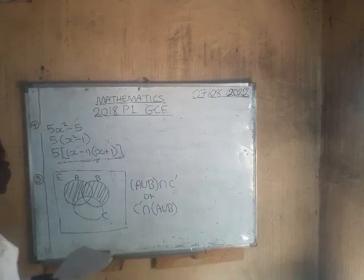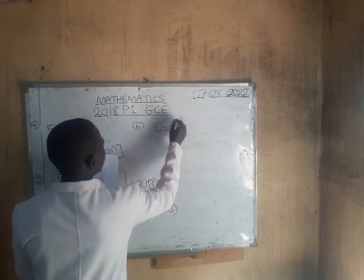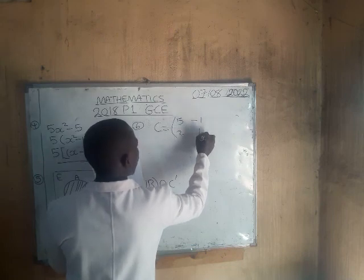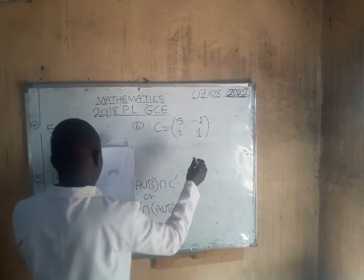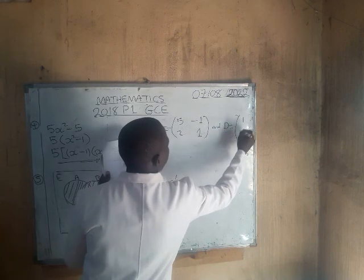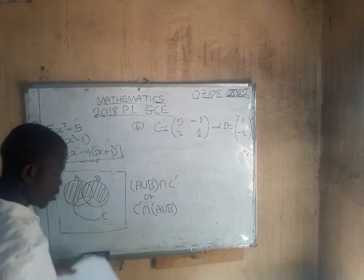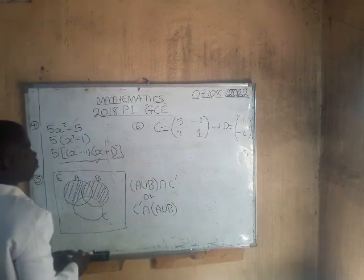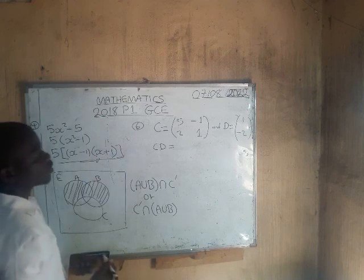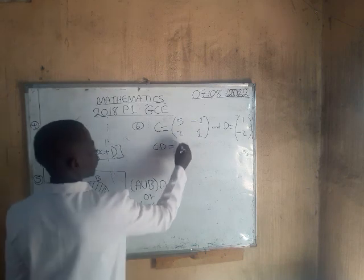Question 6: given that matrix C equals [5, 2; negative 1, 1] and matrix D equals [1; negative 2], express CD as a single matrix. To find CD we multiply matrix C by matrix D using the row-by-column concept.